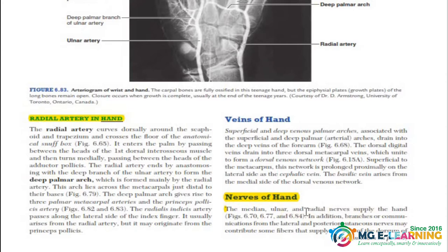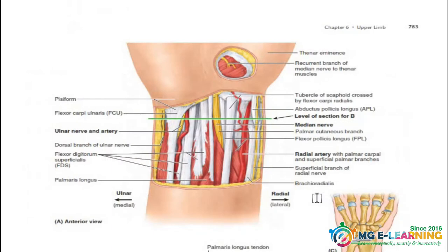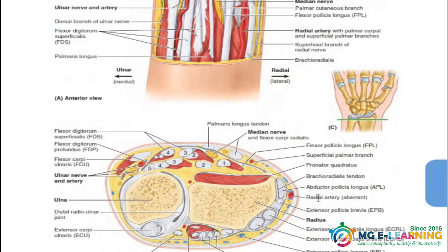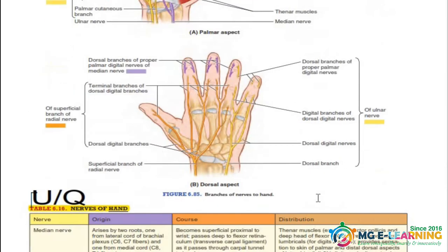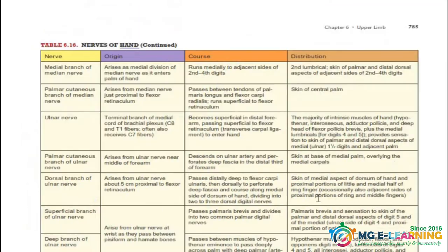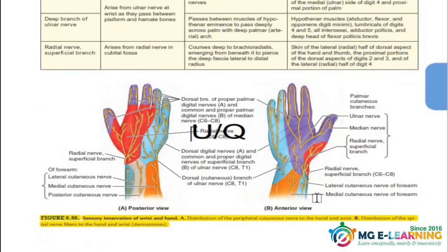The nerves of the hand are very very important for SCQs. Questions usually come in exams as scenario-based questions about nerve injuries — at what level the nerve is injured, which disability may occur, which motor function is lost, and where sensory sensation is lost. You have a table for the nerves of the hand that you must do completely.